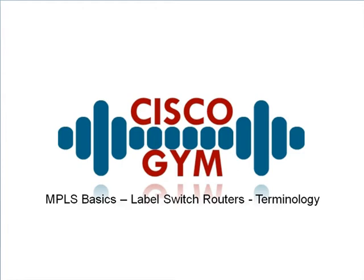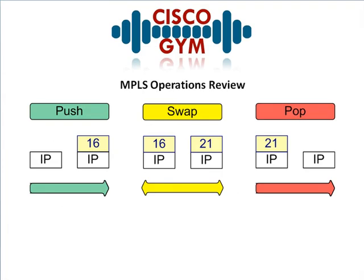Before we get into the terminology associated with label switch routers, let's review the three major MPLS operations: push, swap, and pop. With a push, the router receives an unlabeled packet and assigns a label for that forward equivalence class — which in most cases is just the prefix. So it says 'I know how to reach this prefix, and to do so I'm supposed to use label 16,' and it pushes label 16 onto the MPLS stack and routes it out the interface specified in the label forwarding information base, or LFIB.